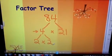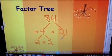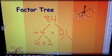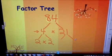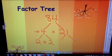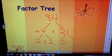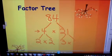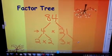21 is a composite number, so it needs to be broken down even further. And we can say that this one is divisible by 3, and 3 times 7 equals 21.